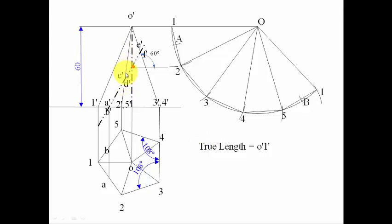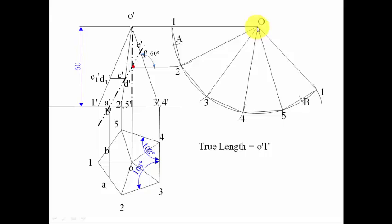For locating points C and D: point C lies on slant edge O2 and point D is on slant edge O5. Project a line in the direction of the slant edge to intersect it, giving points C1 dash and D1 dash. Keep one leg of your compass at the measured point and with O as center cut an arc on slant edge O2 — that gives point C. Repeat with the same radius on slant edge O5 — that gives point D.